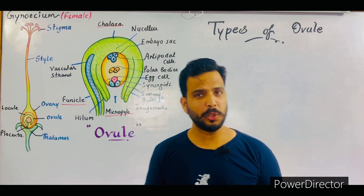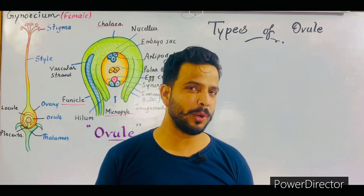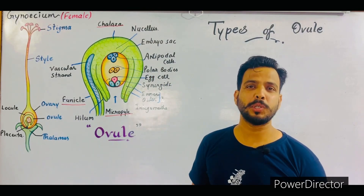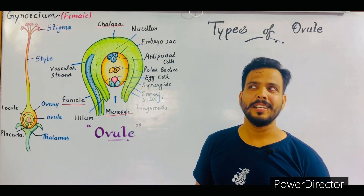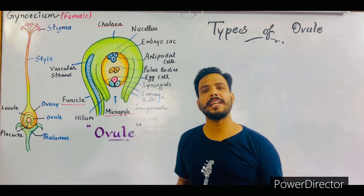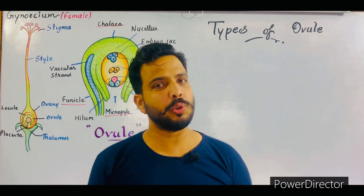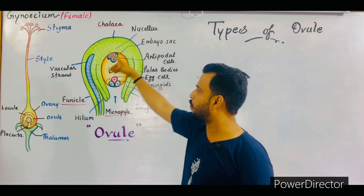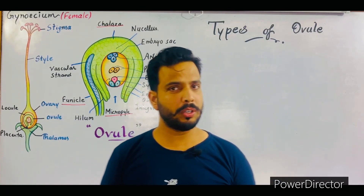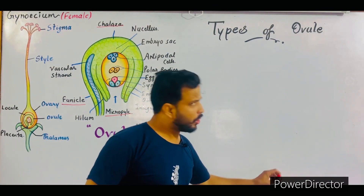Good morning everyone, my name is Vijay Gupta and you're watching Biology Classes. In this lecture I will continue Chapter 2 for my Class 12 students, BSc students, and NEET students. We will discuss the types of ovule. In my last video I described the structure of ovule, and now I will tell you how many types of ovules are found in flowering plants.